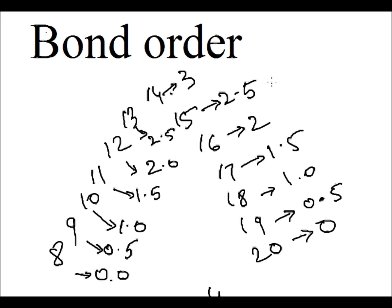Take an example. If NO plus is given, count number of electrons. In N it is 7, in O it is 8. So total is 8 plus 7, which is 15. And minus 1 electron, that is 14. If number of electrons is 14, then bond order will be 3.